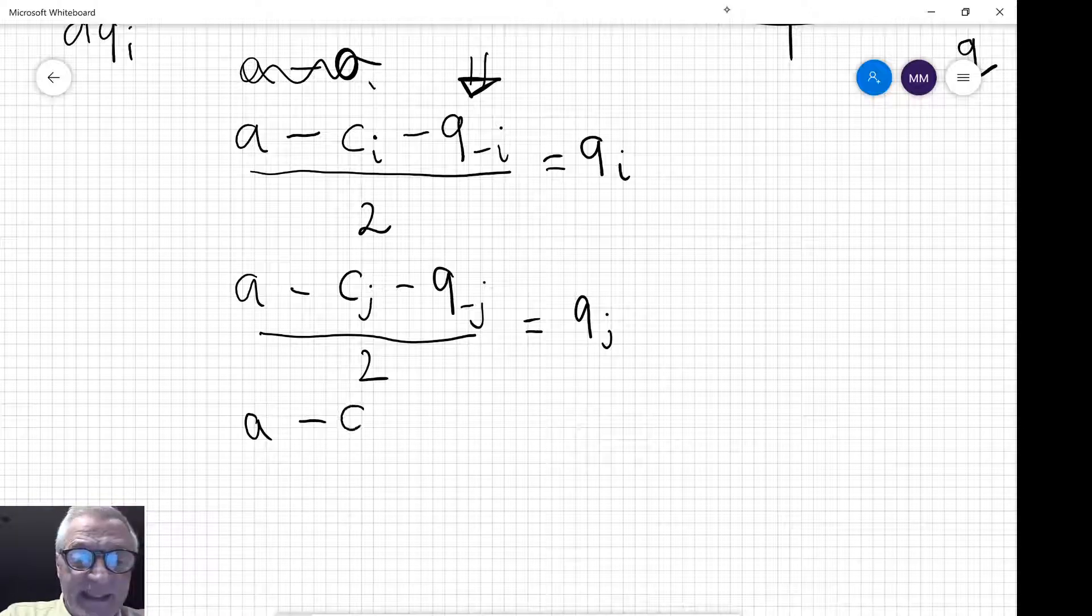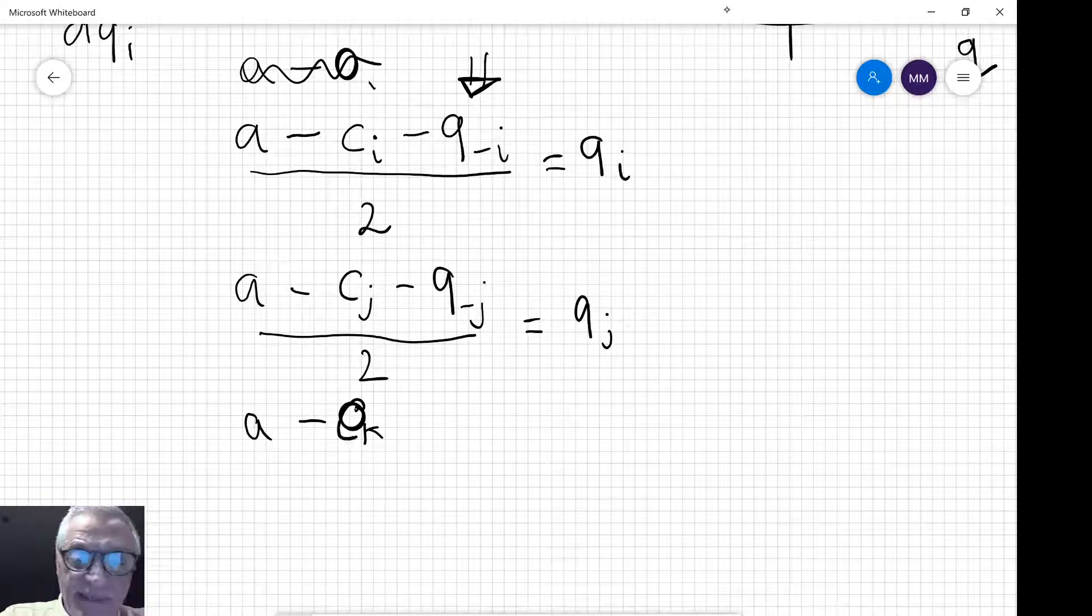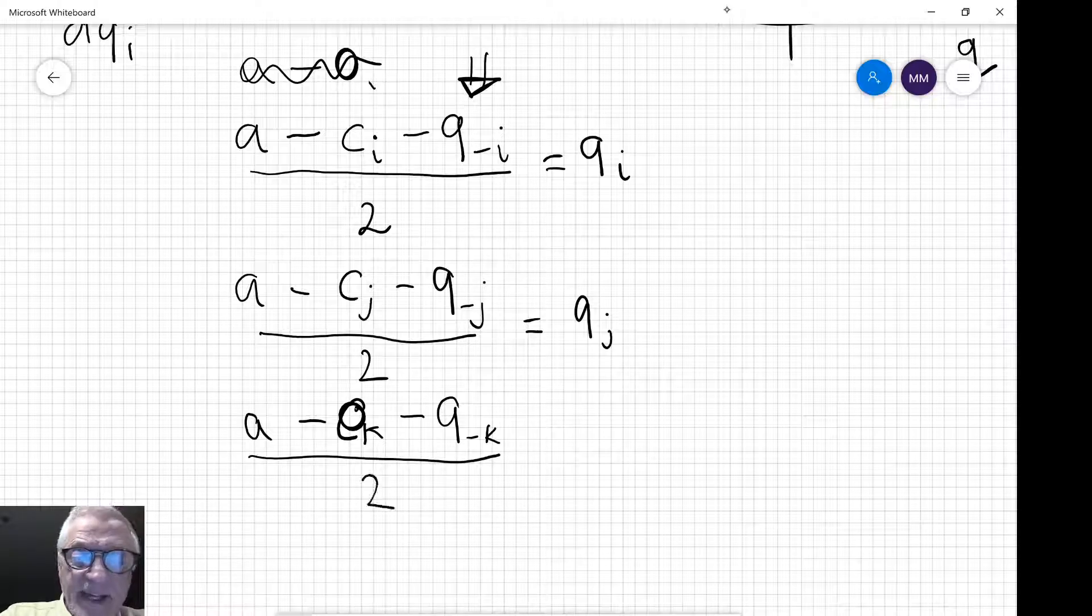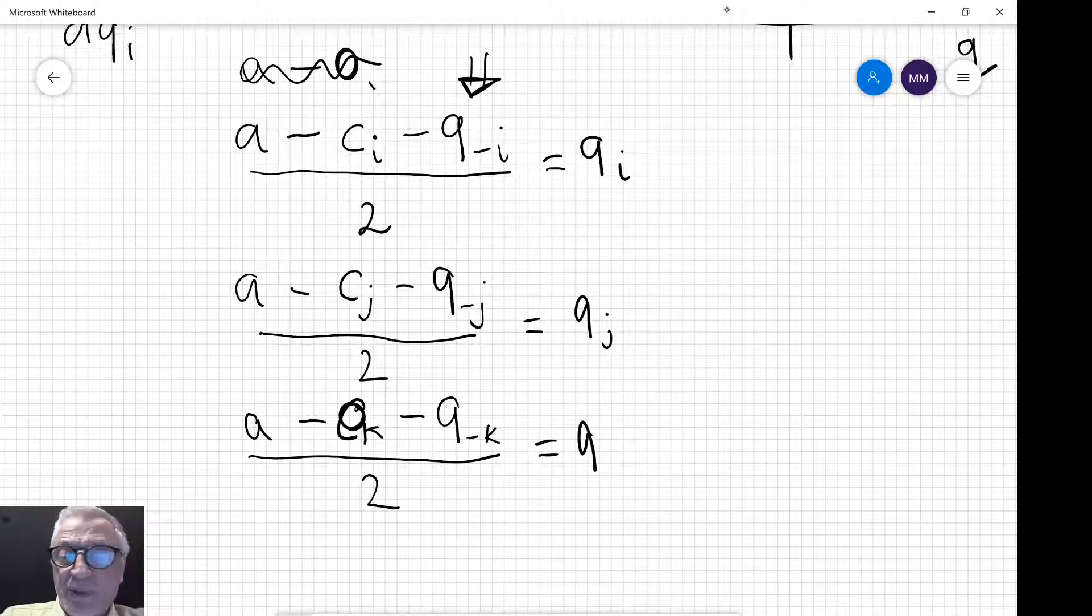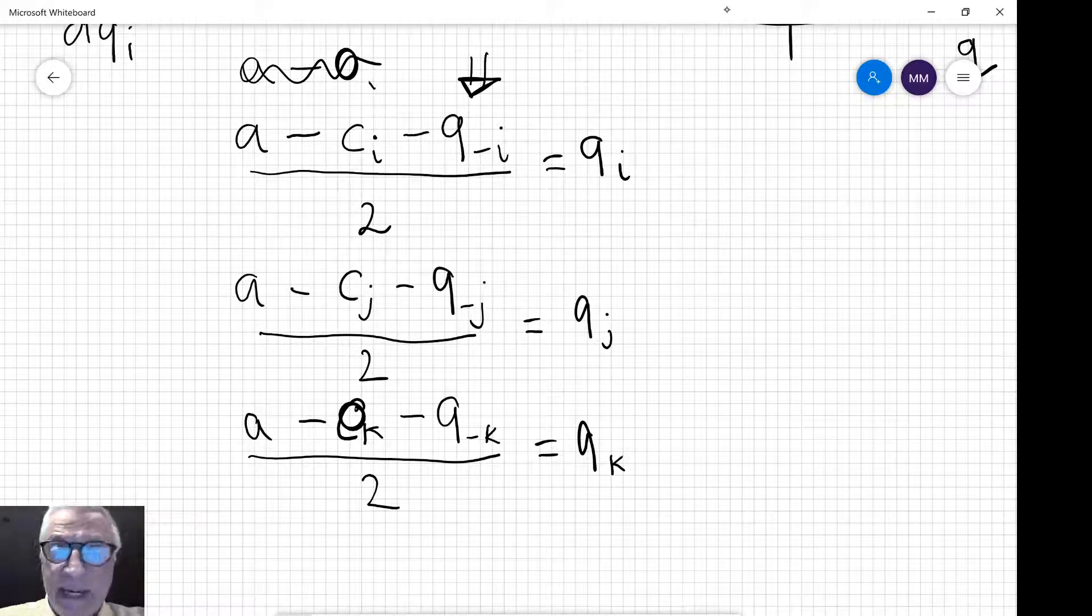And what about firm K? Well it's going to be exactly the same: the intercept minus marginal cost of firm K minus the output of everybody other than firm K divided by 2 is going to be the best response for firm K.